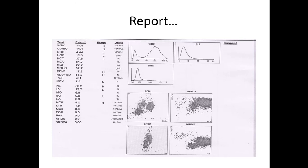On the right side of the flags are the units. WBCs at 11.4 are represented as 10 raised to 3 per microlitre, meaning the WBC count is 11,400. Platelet count is 281,000. To the right of the units are two types of graphs — the upper three graphs are histograms, represented by continuous lines, and the lower four graphs are scatterograms, in which various blood cells are represented as tiny dots.